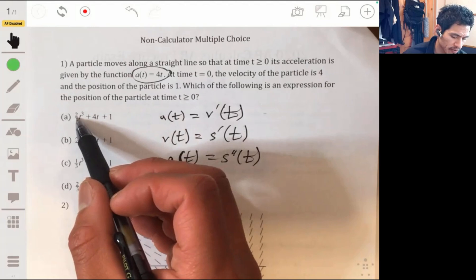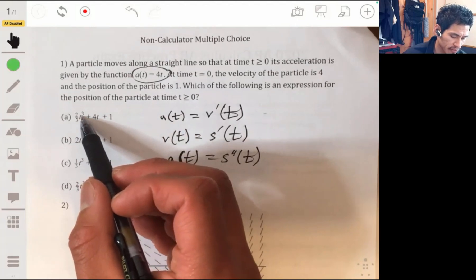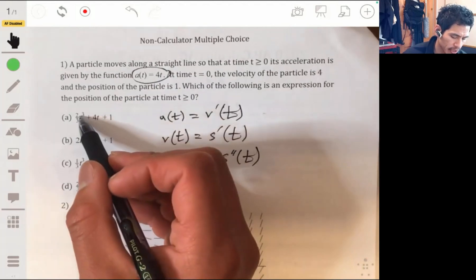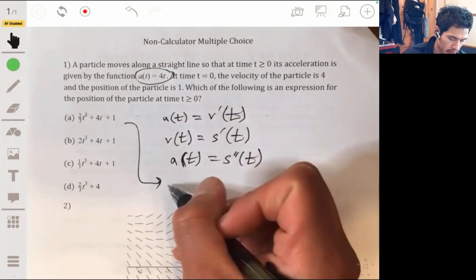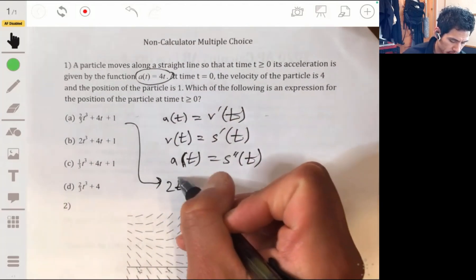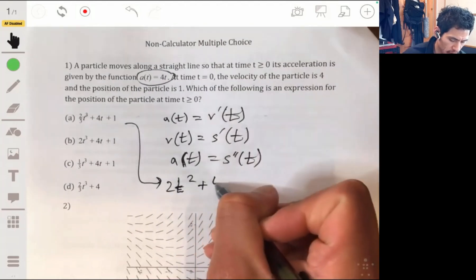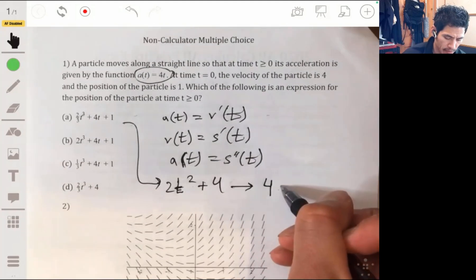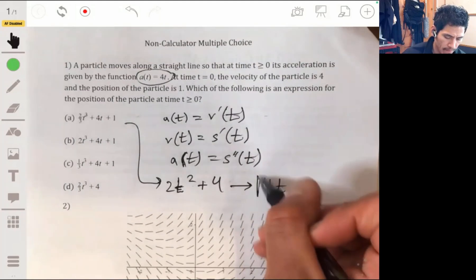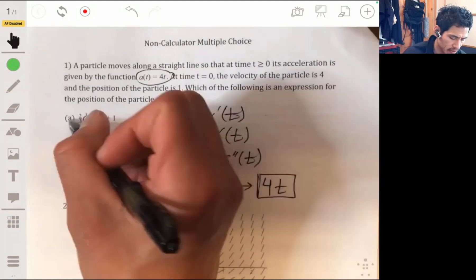So the first one, if you take the first derivative, you would get the threes that cancel, you would get 2t, 2t squared plus 4. Take it again and you get 4t. So right away, the answer is A.